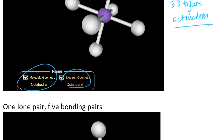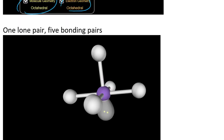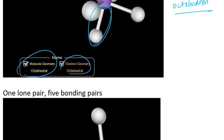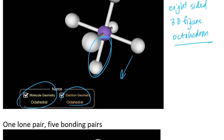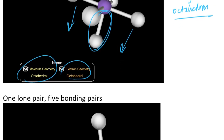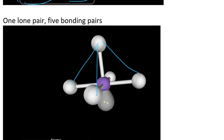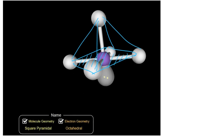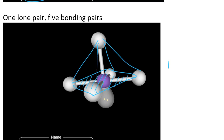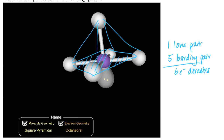If I have one lone pair, that changes the geometry slightly. Basically, if I remove the bottom bond, I lose the bottom pyramid shape from this double-pyramid structure. Instead, what I get is something that looks like just one pyramid, but the floor of the pyramid is square-shaped rather than triangular. So when I have one lone pair and five bonding pairs for a total of six electron domains, the molecular geometry is square pyramidal, even though the electron domain geometry is still octahedral.